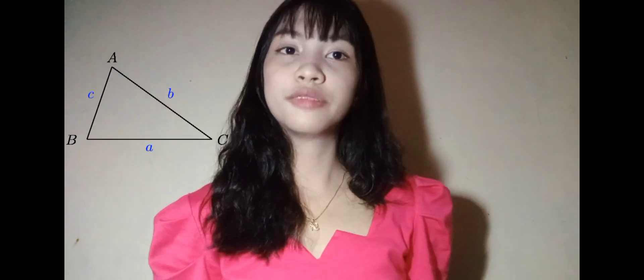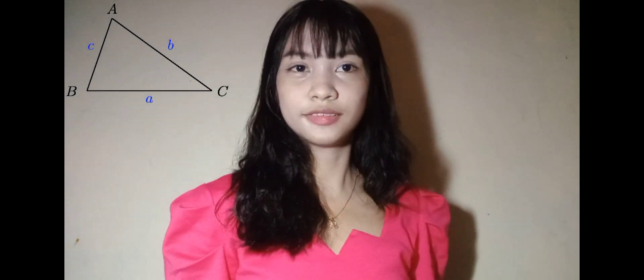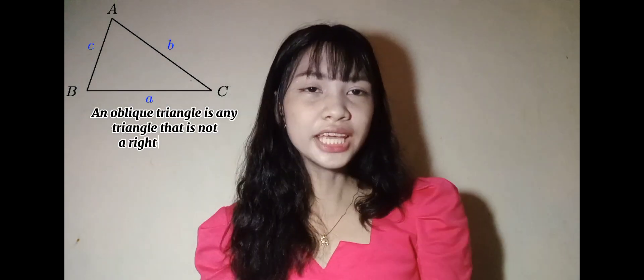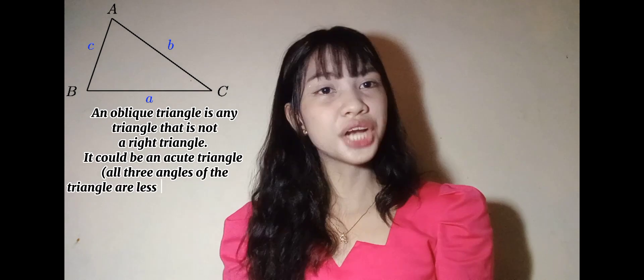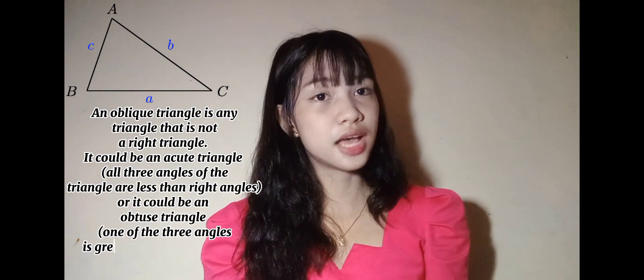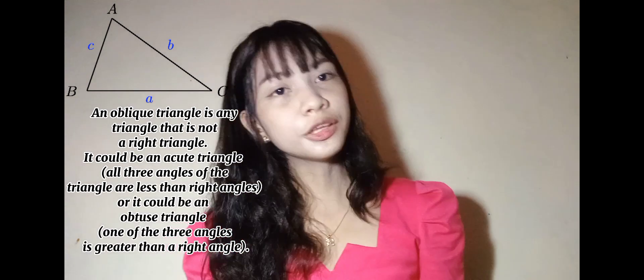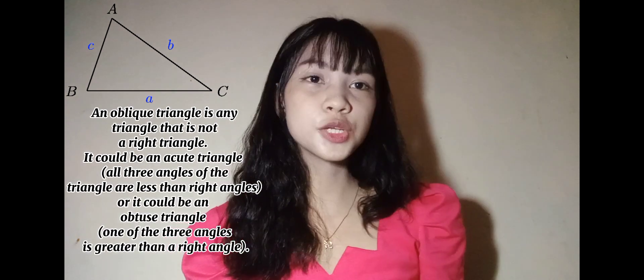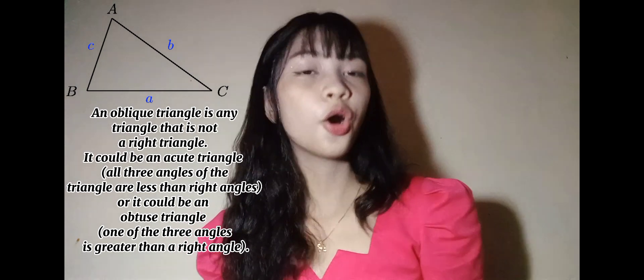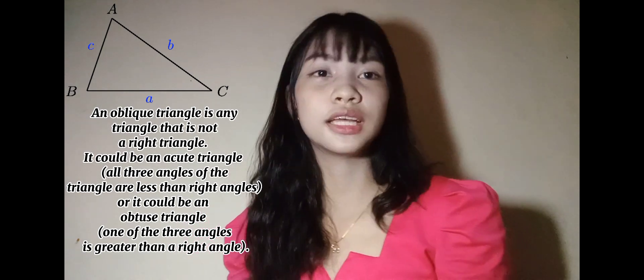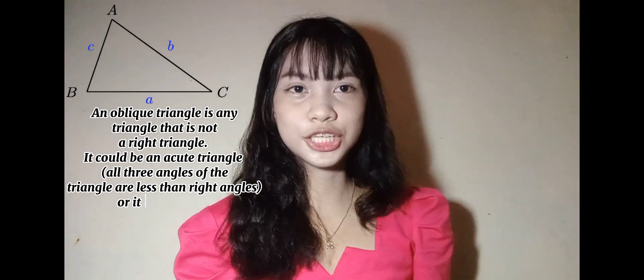When it comes to the Law of Sines, we already have an oblique triangle. An oblique triangle is any triangle that is not a right triangle — it could be an obtuse triangle or it could be an acute triangle.